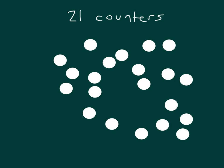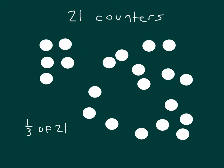Here I have 21 counters, and we're going to look at this problem where we have 1/3 of 21. It will help us to arrange the counters, so we'll move them around and arrange them.